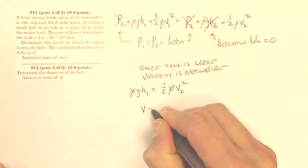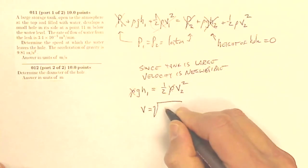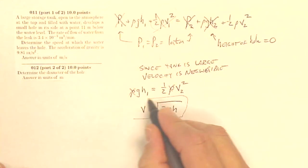That'll give me that my velocity is the square root of 2gh, which should look remarkably familiar because that is the speed at which it would be falling if it fell from that height, just from our kinematics.